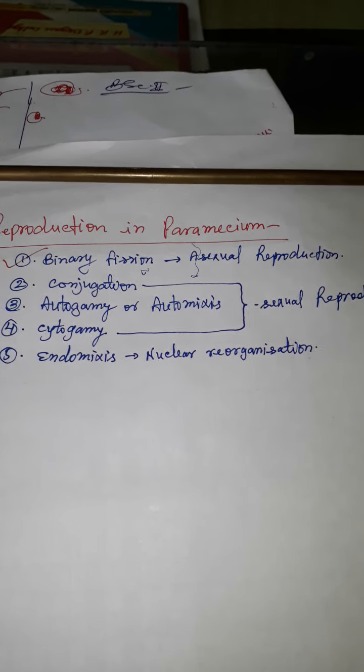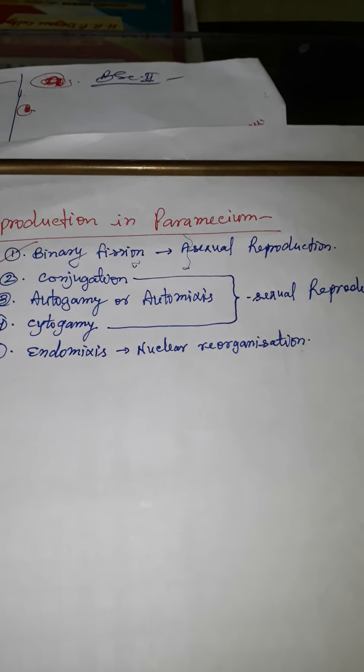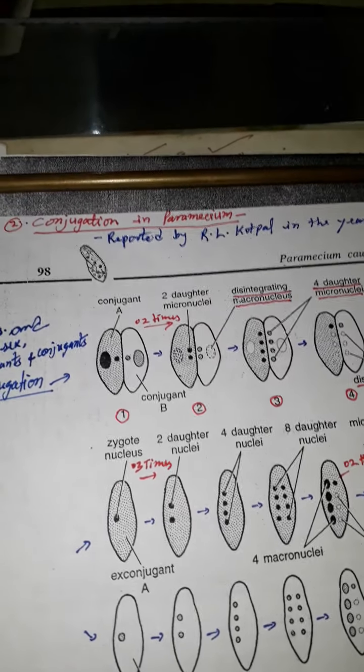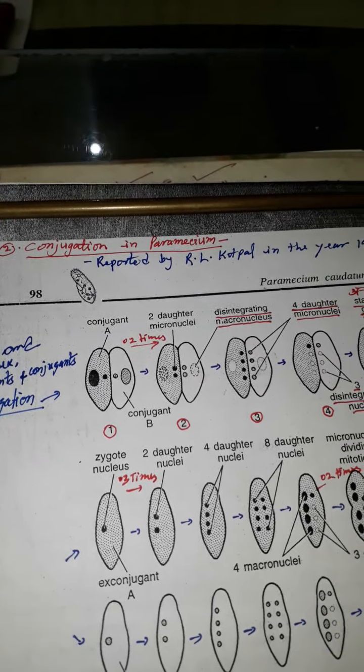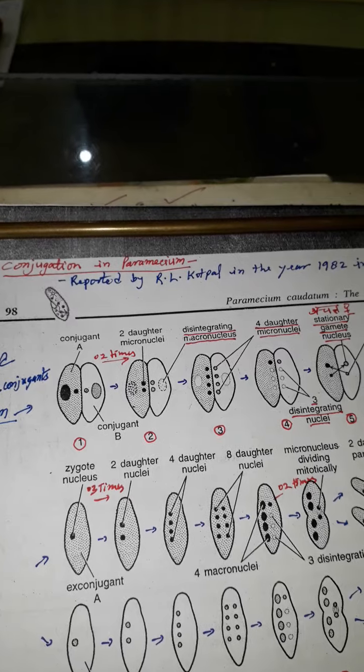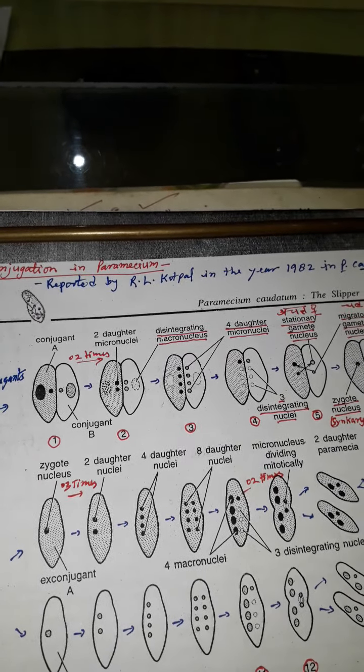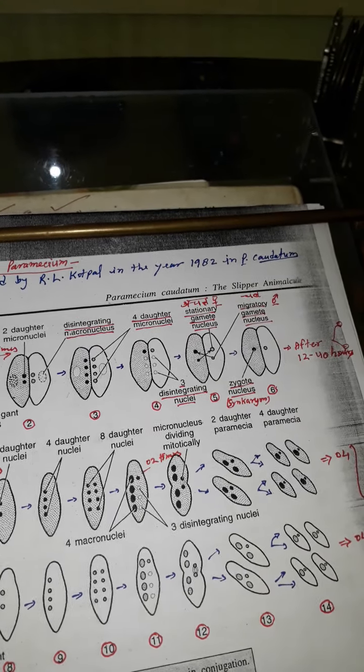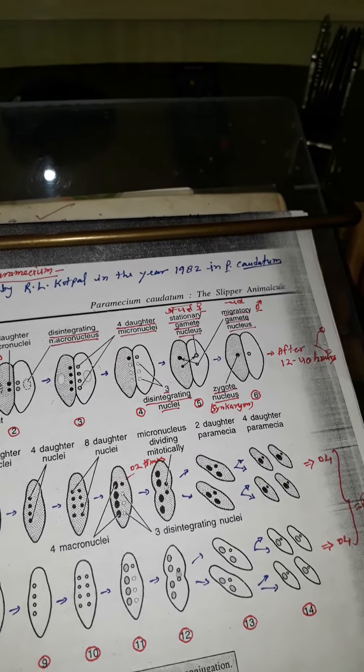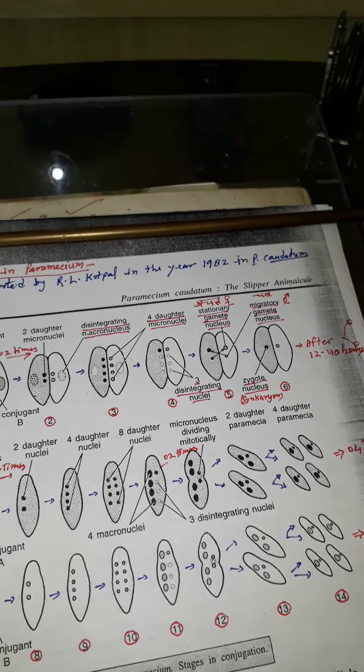So, come on the main topic — conjugation in Paramecium. Dear students, the process of conjugation in Paramecium was reported by scientist R. L. Korpal in the year 1982 in Paramecium caudatum. As per your requirements, I will discuss all the things in Hindi and English mixed medium. So, let's start.